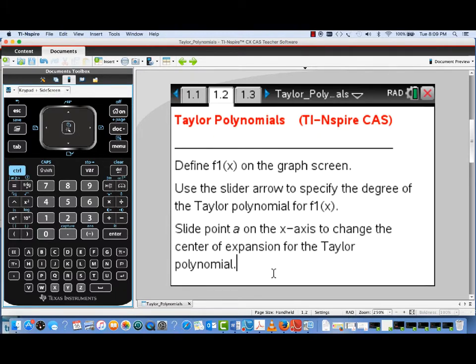A little explanation of what we're going to see. We've set up a document here which will let us define a function F1, and then we'll have a slider that we'll use to specify the degree of the Taylor polynomial for F1 of X. We're also going to have a movable point that will let us change the center of expansion for the Taylor polynomial.